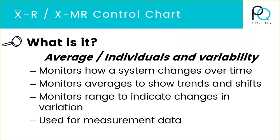What is a control chart? It's really a chart that looks at data and tries to show you trends and shifts. You're looking at both central tendency — that is the X or X-bar chart or moving average chart — and the variability chart. That's the range, sigma, or moving range chart.